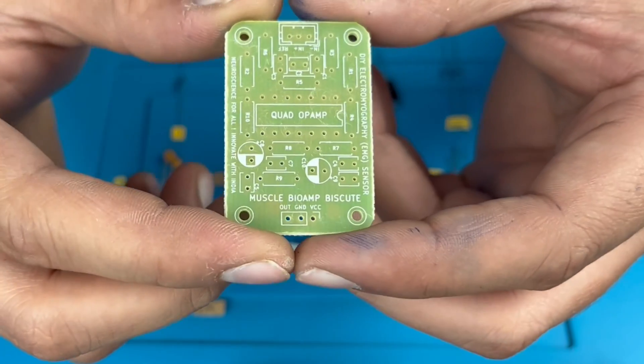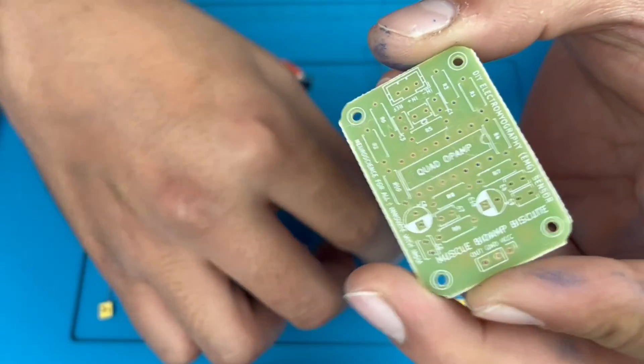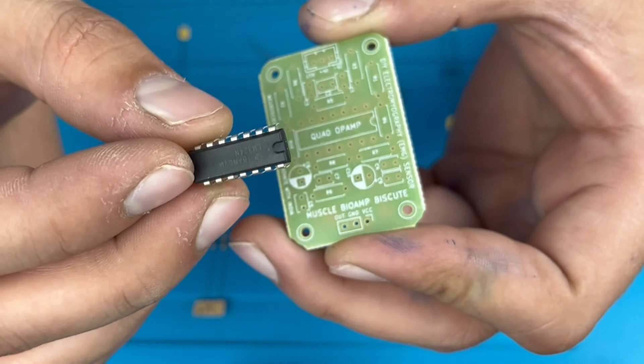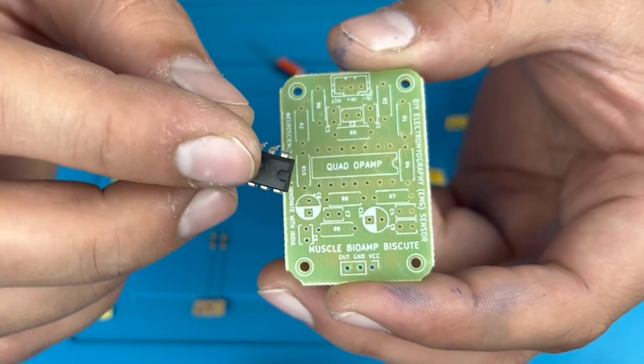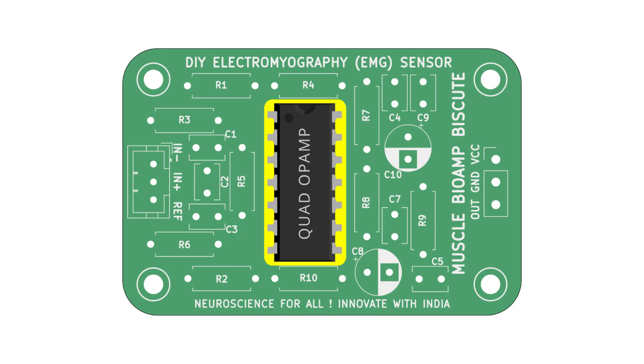This is the PCB. We will put the LM324 IC over here. You see the notch over here. This is the diagram. In this way we will put the IC in this PCB.